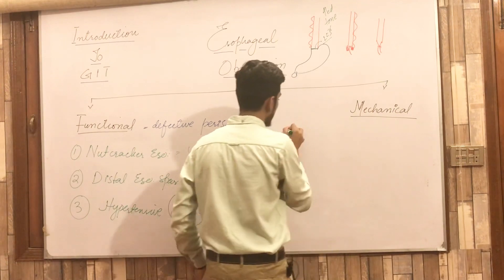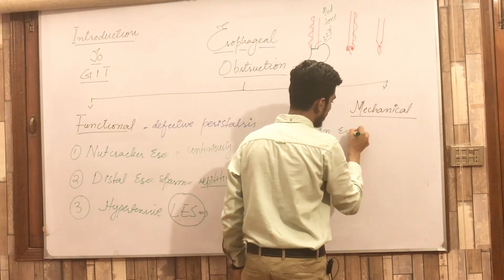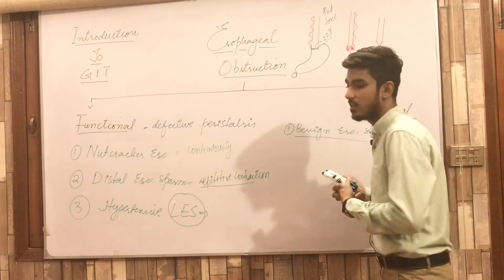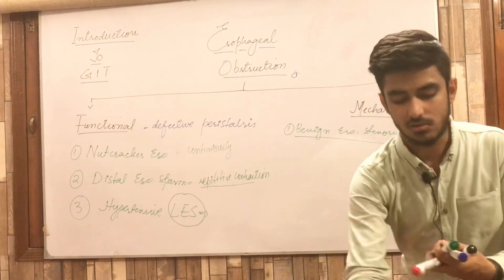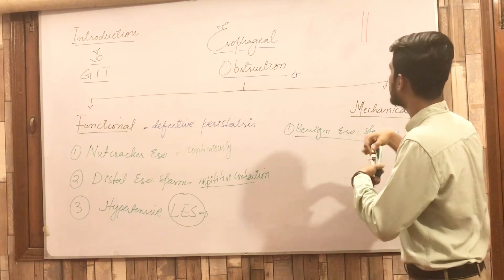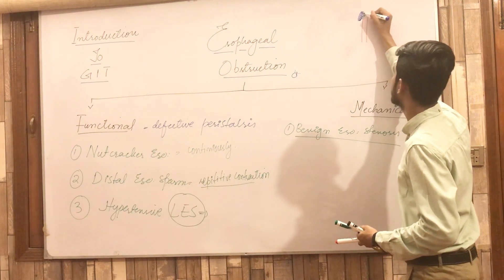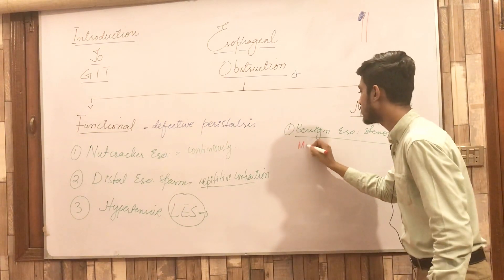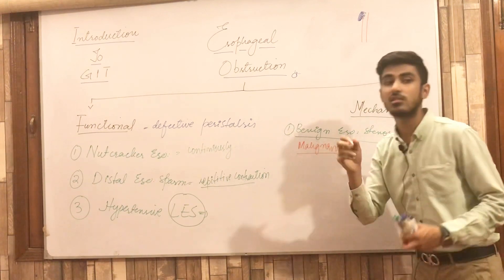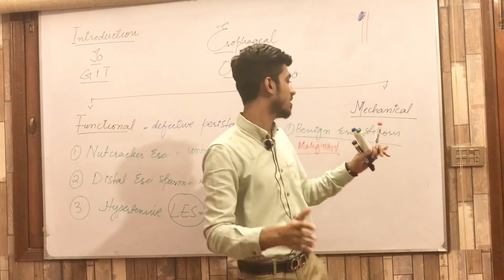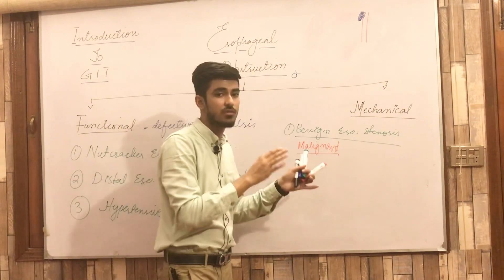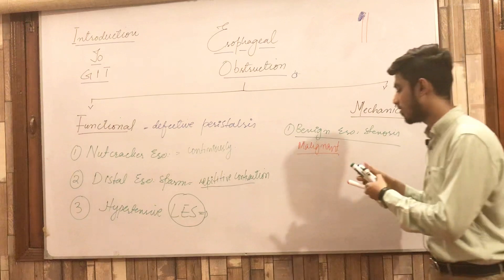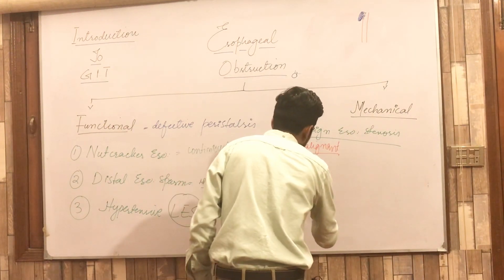Moving on to mechanical esophageal obstruction, there are also three principal types. The first is benign esophageal stenosis, where a benign mass compresses the esophagus, decreasing its lumen. This stenosis may also be malignant. In malignant conditions, an important sign is significant weight loss, which is an alarming sign not only in esophageal conditions but in any malignancy.